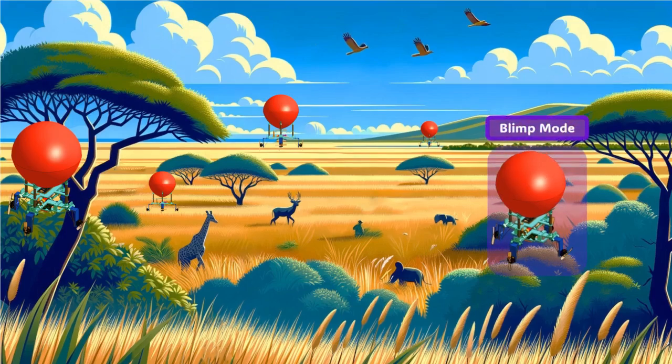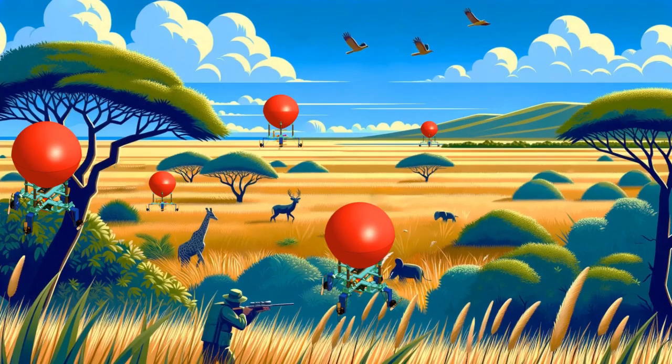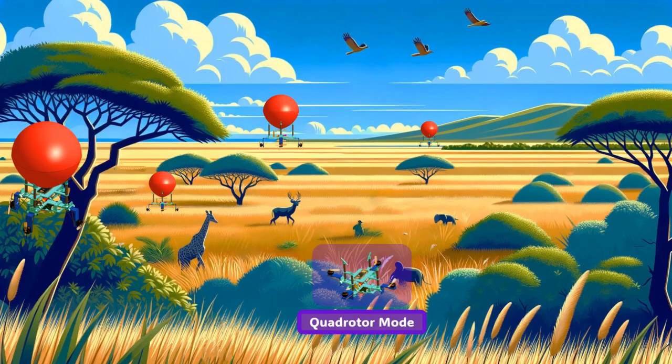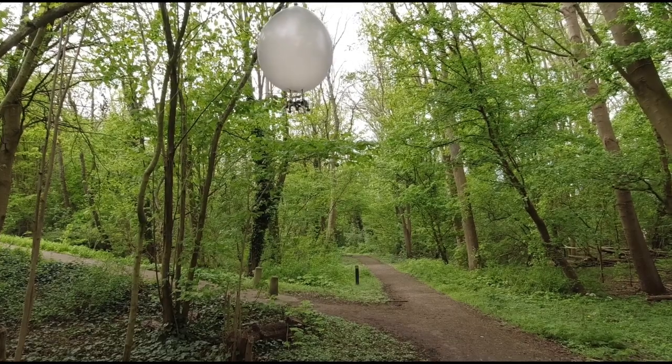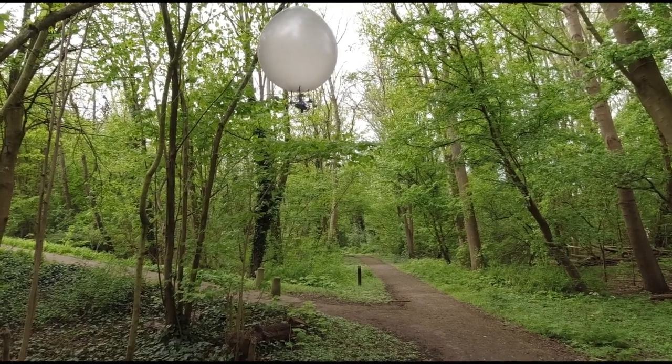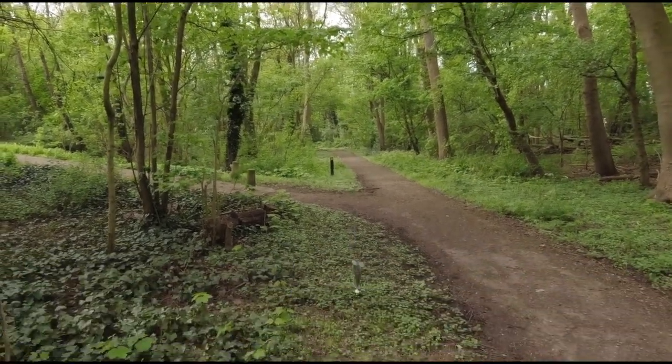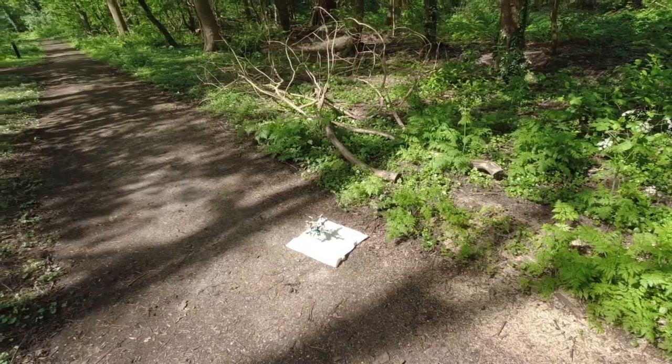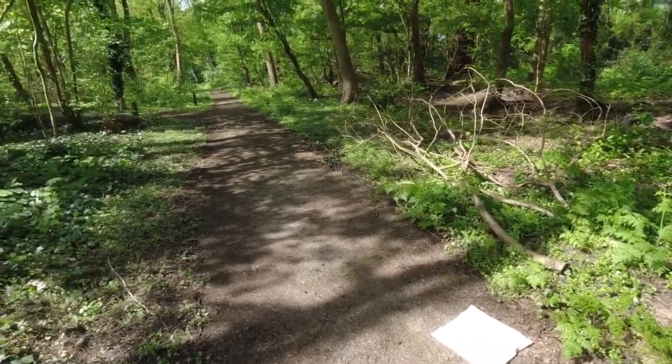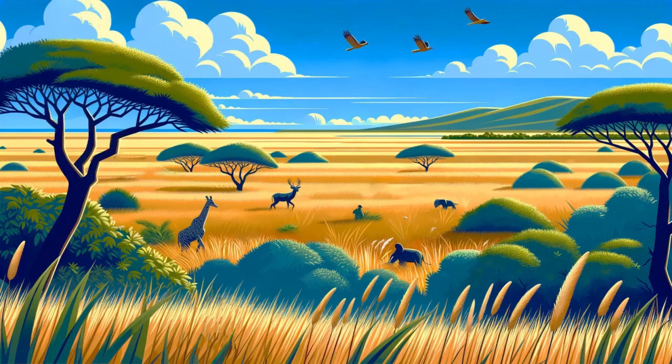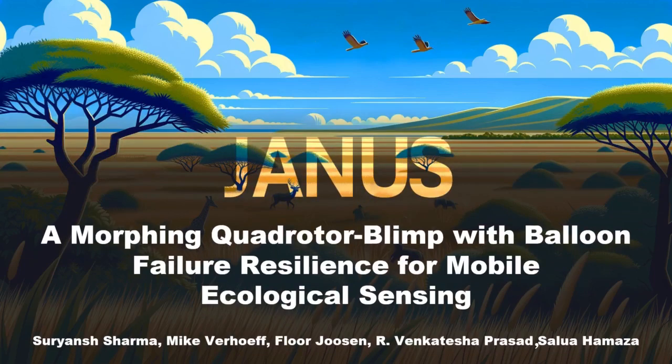However, these may also bring out encounters with malicious agents like poachers who are inclined to shoot these blimps down. This necessitates a method for recovery. This can be done by augmenting omnidirectional blimps with balloon failure sensing and quadrotor morphing ability, as it is much harder to shoot down a quadrotor than a blimp.